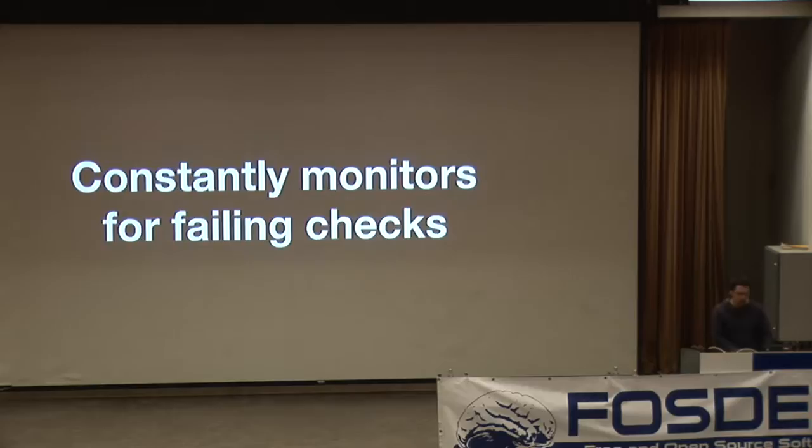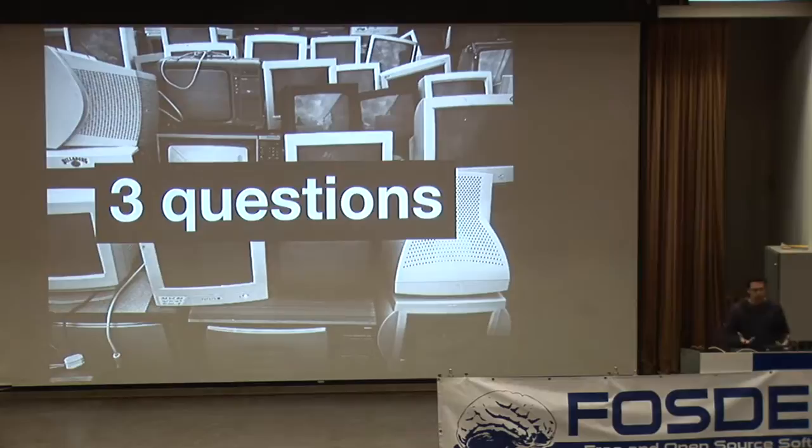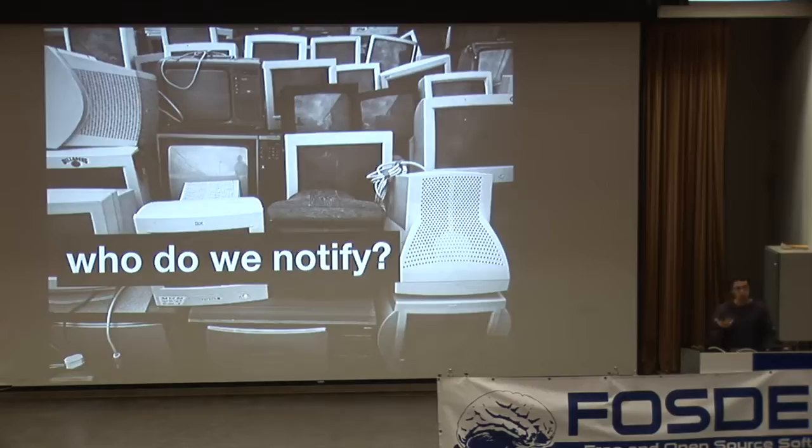A monitoring system is constantly monitoring for failing checks. It's running through a gigantic list of things that you want to check, and it's going to notify if something is amiss — something that is not the way that you expected it to be. So monitoring systems are essentially asking three questions: what is the next check I need to perform, was the check okay after I executed it, and who do we need to notify?